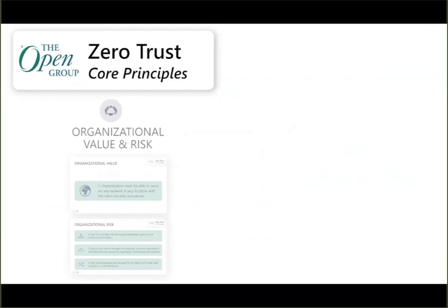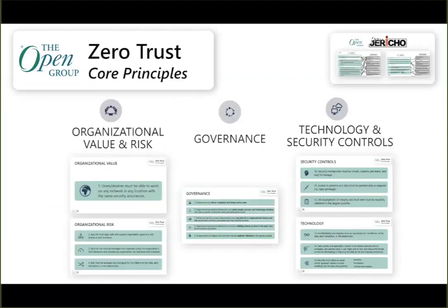That leads us to the principles themselves. We broke these down into about five different categories. The first two are organizational value and organizational risk. The next one is governance. The last two are technology and security controls. I'll be covering each of those in a little bit of depth, and then talking about how we map to the Jericho Forum. Steve did an amazing job describing some of the history, so I'll give a quick overview of how those things map.